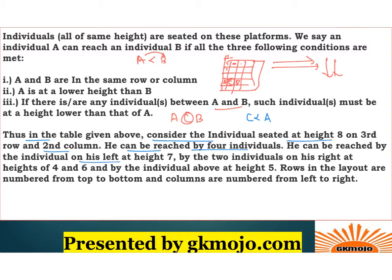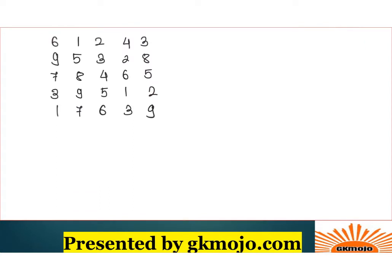They've given an illustration of how to interpret the square layout. Consider the individual seated at height 8, which is in the third row and second column. This individual can be reached by four others. The individual to his left at height 7 can reach him because they are in the same row and 7 is less than 8. Also, the two individuals to his right at heights 4 and 6 can reach 8 — 4 is less than 8, and 6 is less than 8 with 4 being less than 6 in between.